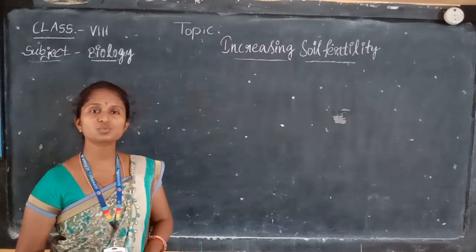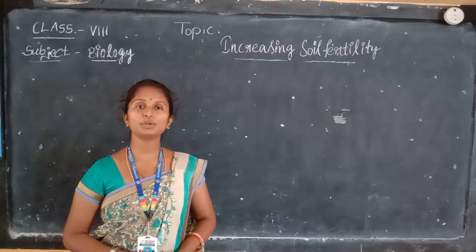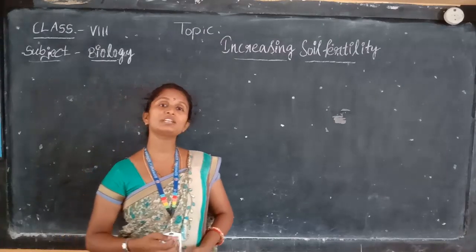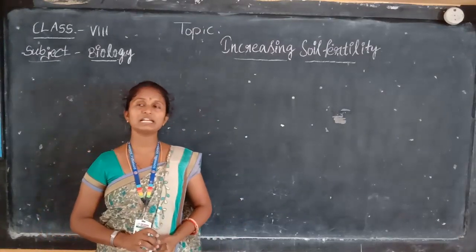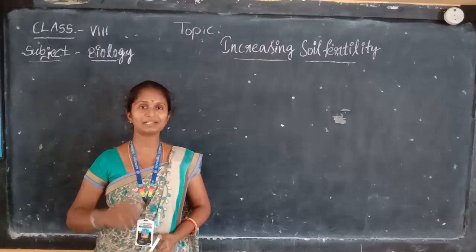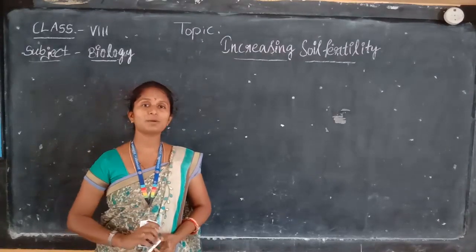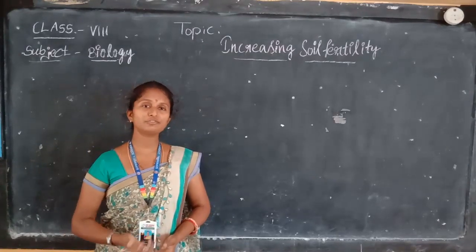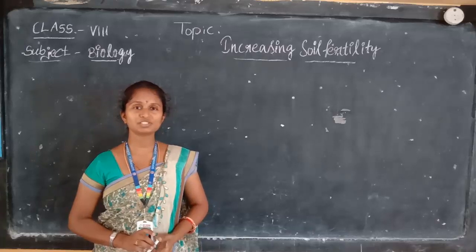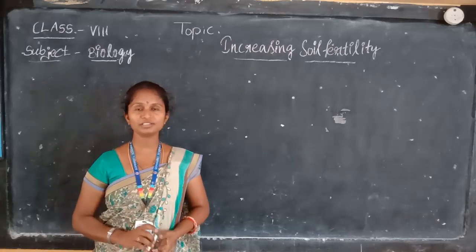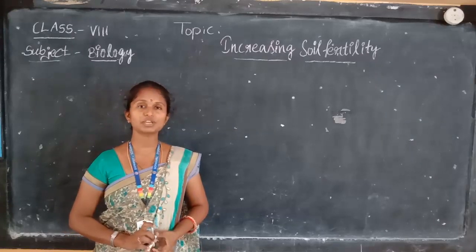What does fertility mean? Fertility means sufficient chemicals and components need to be kept in the soil for plants to get more yield. Generally with crops — from January, March, April, June — we are continuously taking food from the soil. The soil may get some loss of energy, loss of nutrients. That is why we spray fertilizers at certain times to get more yield.